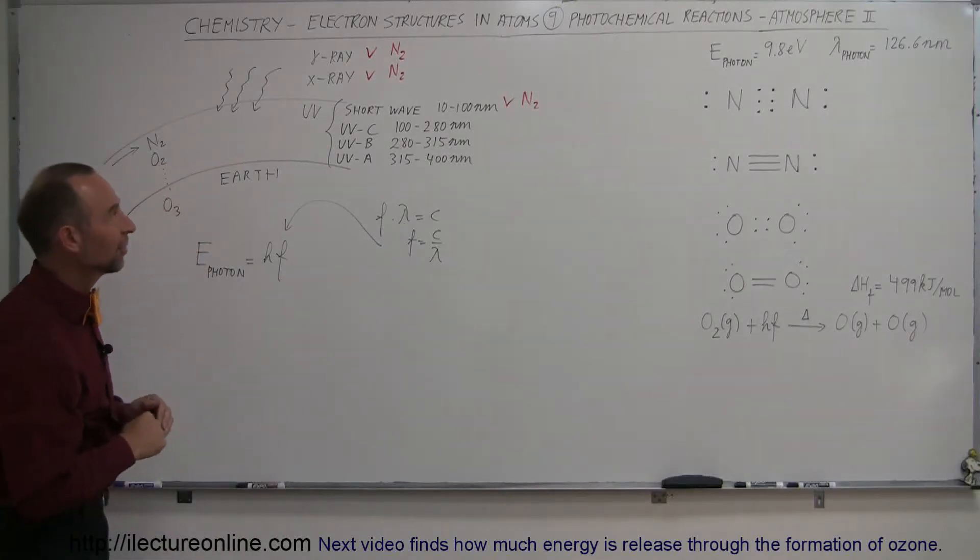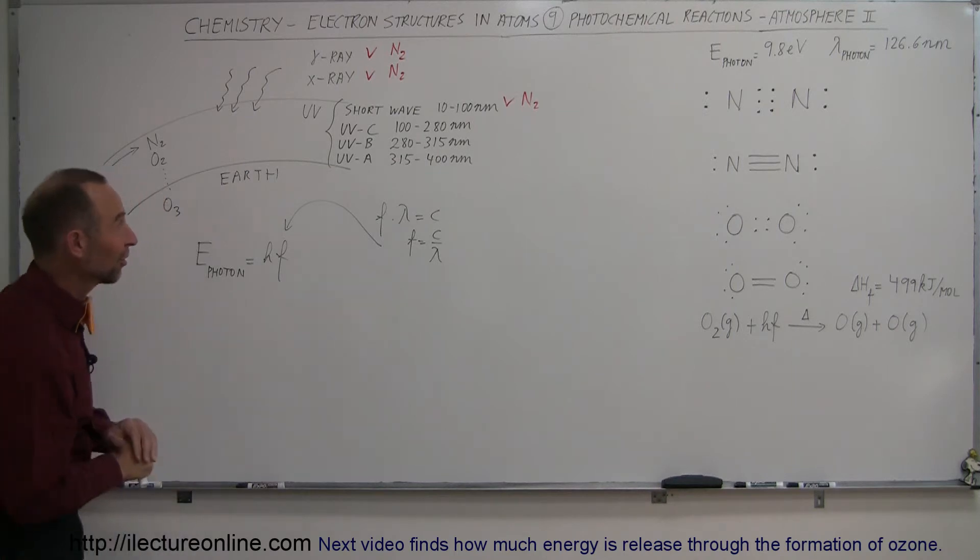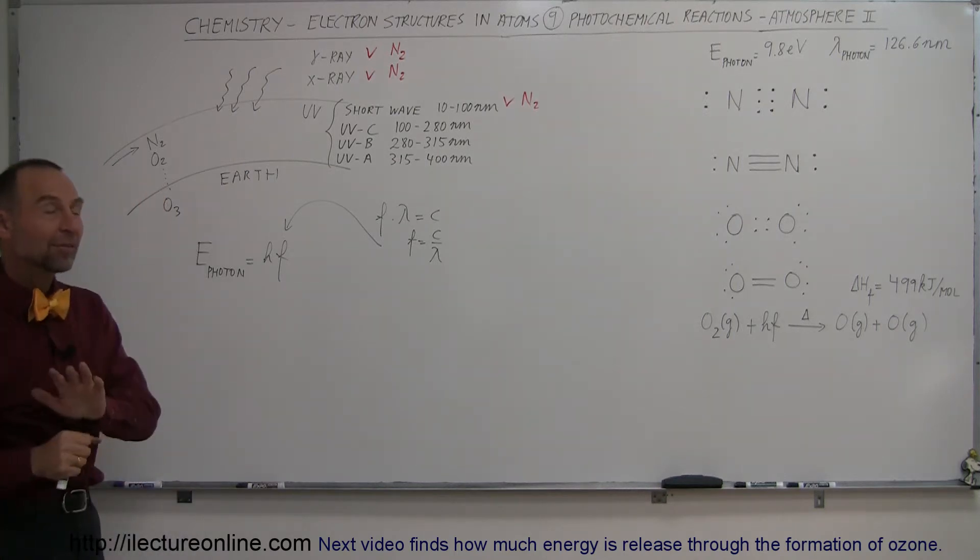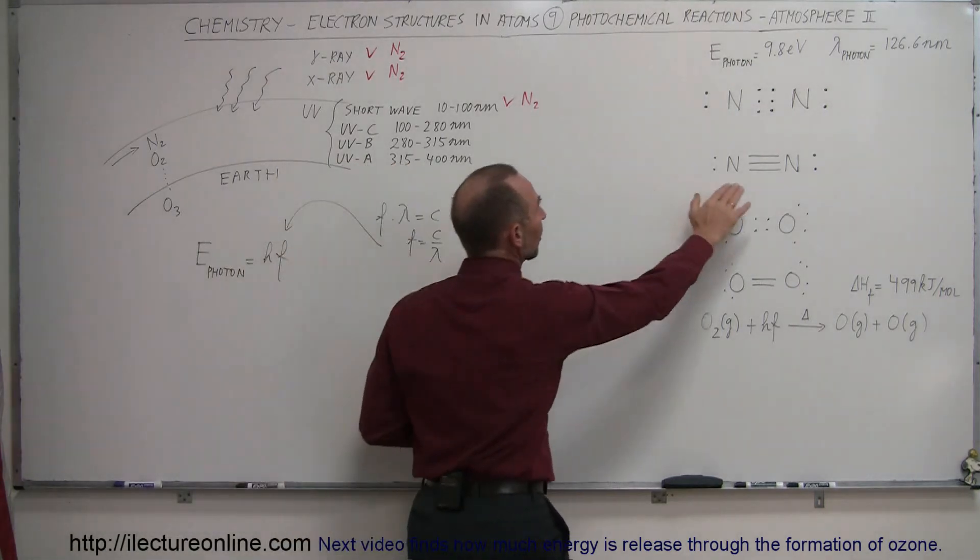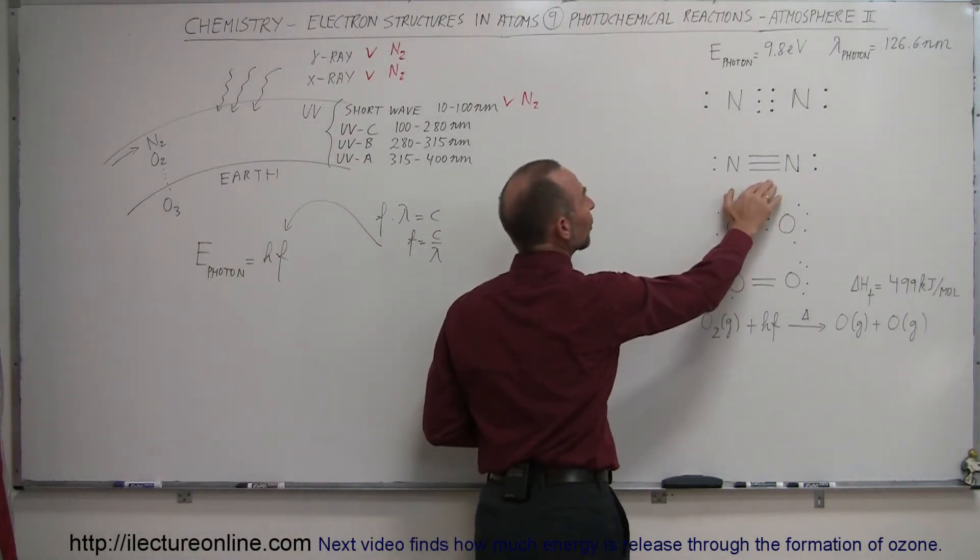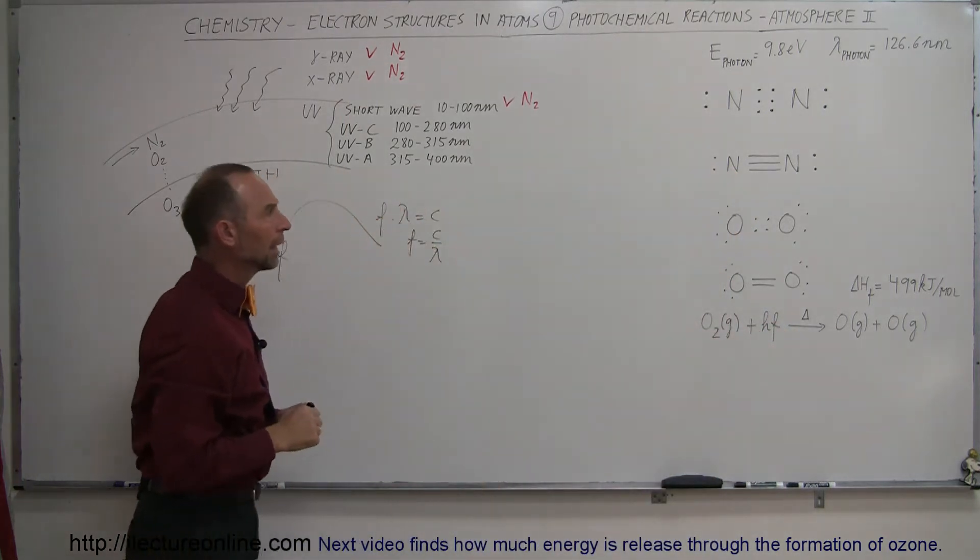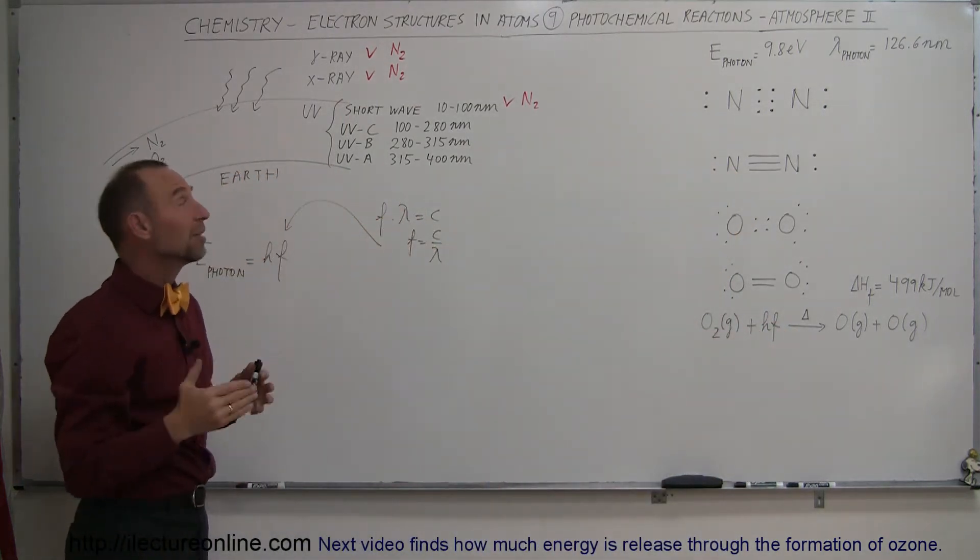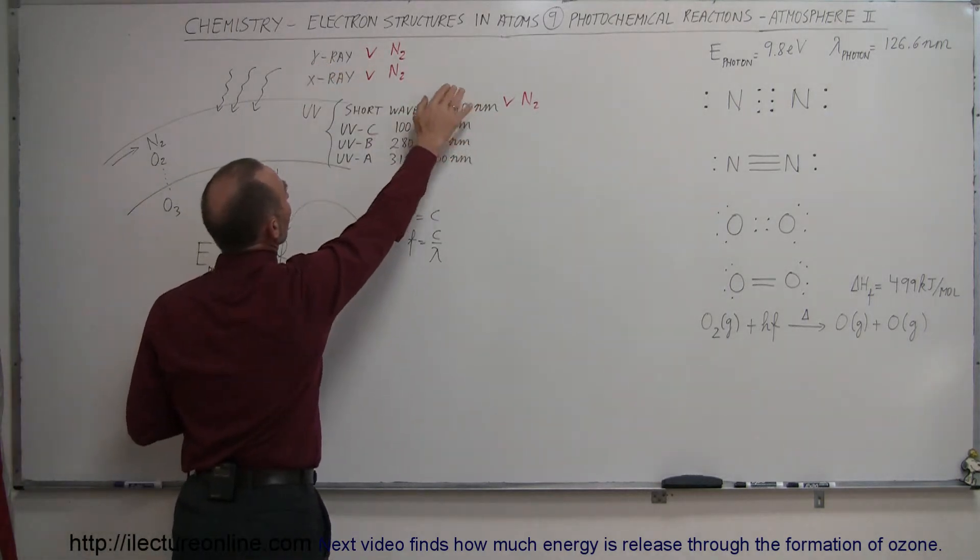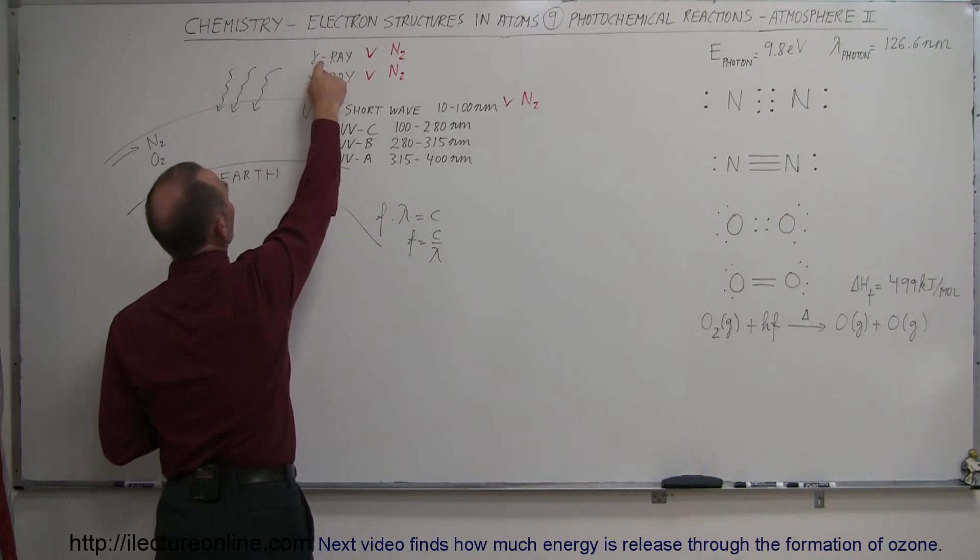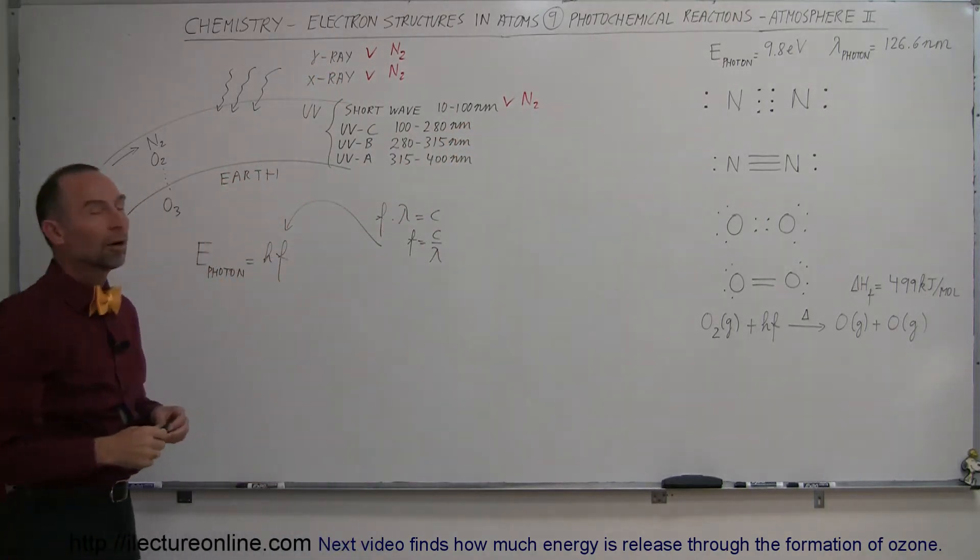Welcome to ElectronLine and here's another example where photochemical reactions are the basis for existence of life on Earth. In the previous example we showed you how the nitrogen molecule, being a triple bonded molecule, requires an enormous amount of energy, almost a thousand kilojoules per mole, in order to dissociate, which means that it can absorb many of the very energetic photons coming into the atmosphere like gamma rays, x-rays, and the short wave radiation of UV.